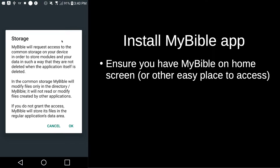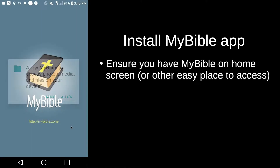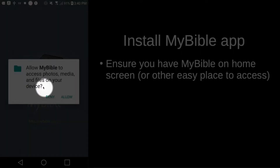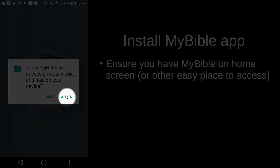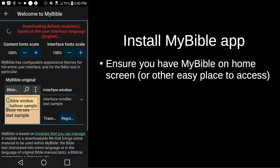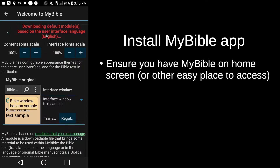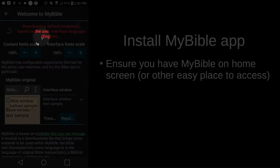The MyBible app is going to ask if it can access your storage, and we'll just come down here and tap OK, because obviously it needs to access storage. Part of accessing storage is photos and media on your device, and again we can tap down here for Allow. The MyBible app will start loading. One of the things it's going to do when it starts is download the default modules, and that's going to be based on the user interface language. In my case, that's English.